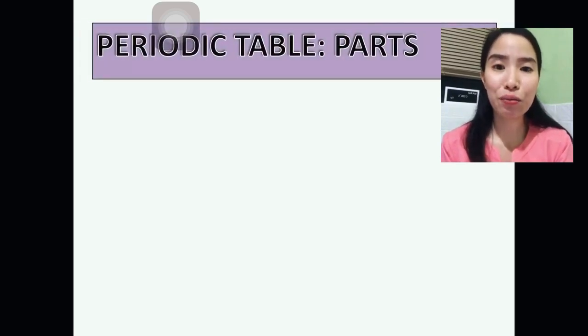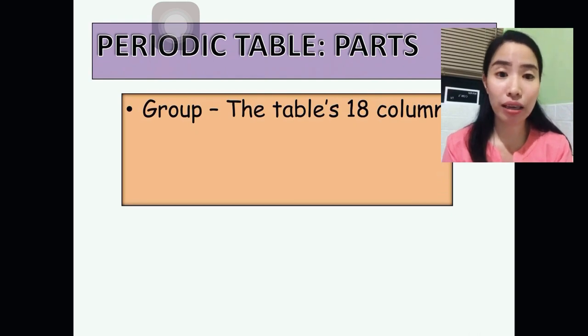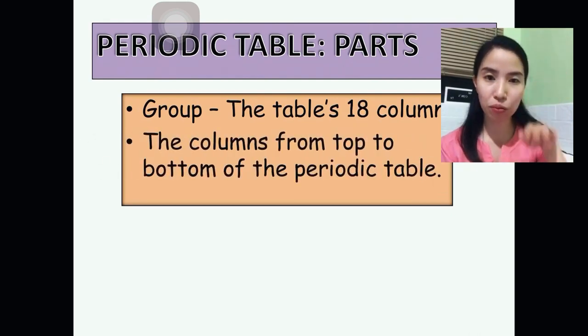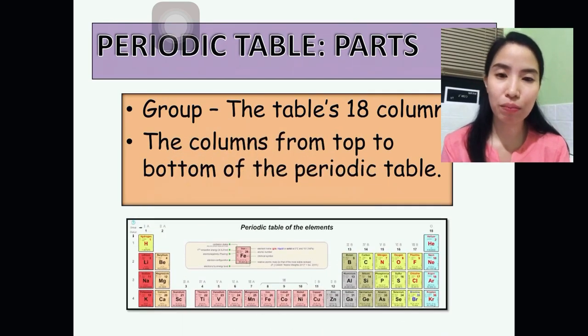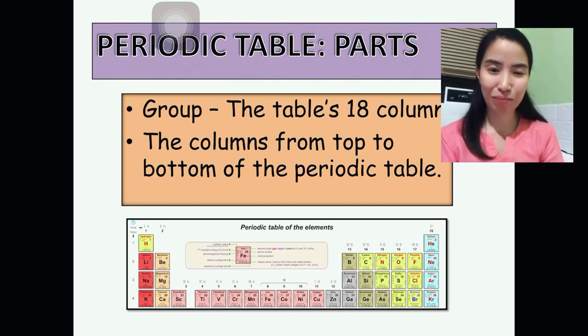Next is the group. This is the table's 18 columns. You're going to look at it from top to bottom. And these are the 18 groups in Periodic Table. Look at it vertically.